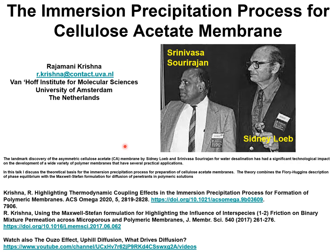In this presentation I discuss the theoretical basis of the immersion precipitation process for preparation of asymmetric cellulose acetate membranes. The theory combines the Flory-Huggins description of phase equilibrium with the Maxwell-Stefan formulation for diffusion of penetrants in polymer solutions.